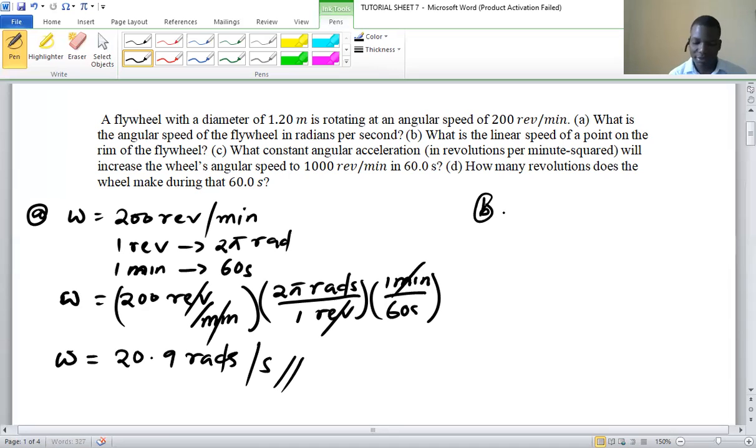And then part B: we are told what is the linear speed of a point on the rim of the flywheel.